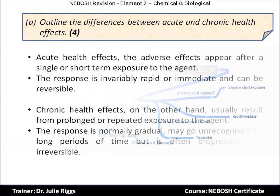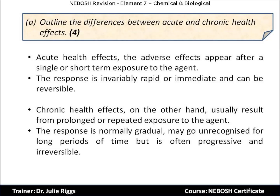For question A — outline the differences between acute and chronic health effects — there are four quite distinct answers. Acute health effects: the adverse effect appears after a single or short-term exposure to the agent; the response is invariably rapid or immediate and can be reversible. Chronic health effects, on the other hand, usually result from prolonged or repeated exposure to the agent; the response is normally gradual, may go unrecognised for long periods of time, but is often progressive and irreversible.